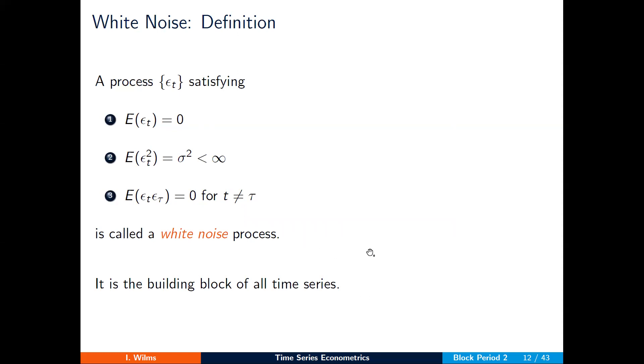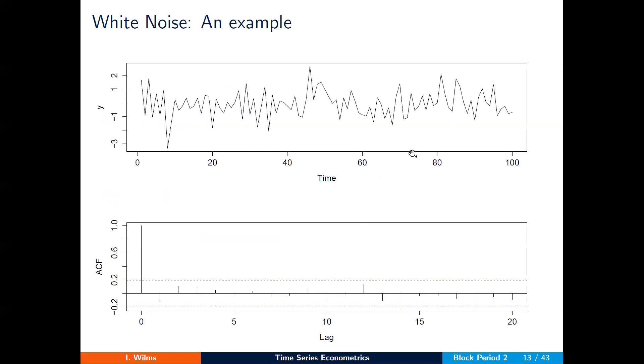How does this white noise process look like? Well, here is a plot of a white noise process that I simulated, which is nothing more than a sequence of iid observations. How does the corresponding correlogram look like? Well, the theoretical correlations would have all autocorrelations equal to zero.